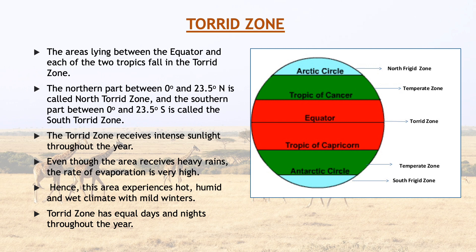The torrid zone receives intense sunlight throughout the year. Torrid zone mein poray saal intense yani extreme sunlight receive hoti hai. Even though the area receives heavy rains, the rate of evaporation is very high. Hence, this area experiences hot, humid and wet climate with mild winters.